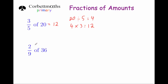Our next one is 2 ninths of 36. We're going to get our 36 and divide it by 9 to work out what 1 ninth is — so that's 4. Then we want 2 lots of that, so we're going to do 4 times 2 to work out 2 ninths, and that's going to be equal to 8.